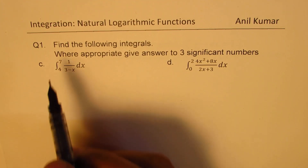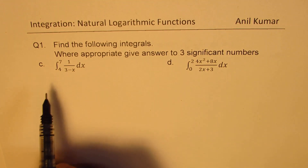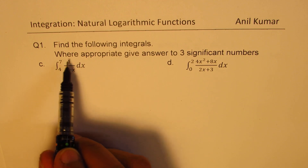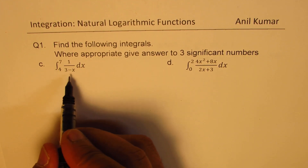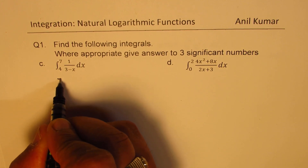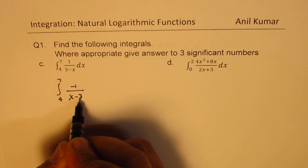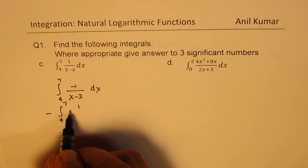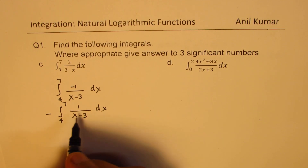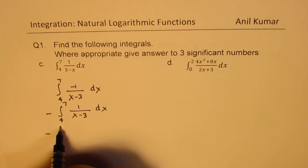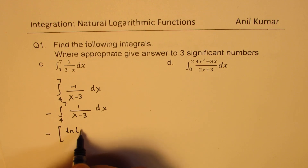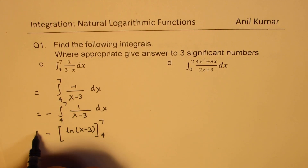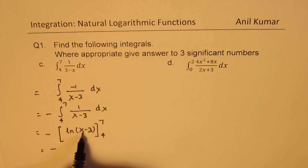Part C is a definite integral, so we will calculate the answer to three significant figures. We need to find the integral from 4 to 7 of 1 over (3 minus x). Since the coefficient of x is negative, it's good practice to rewrite this as negative 1 times integral from 4 to 7 of 1 over (x minus 3) dx.